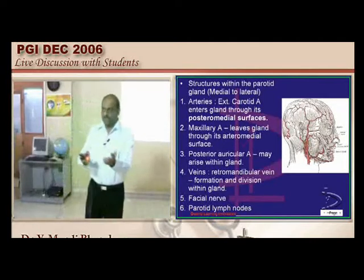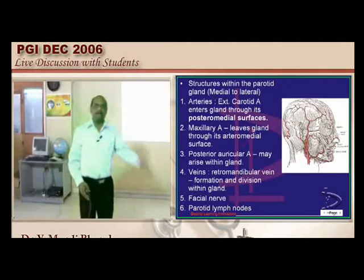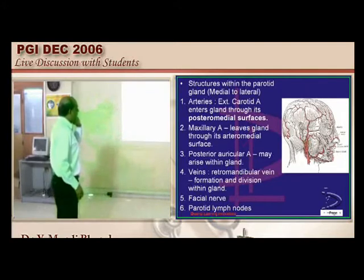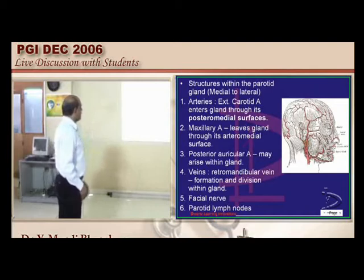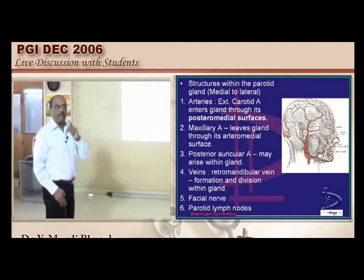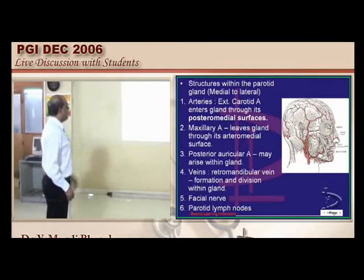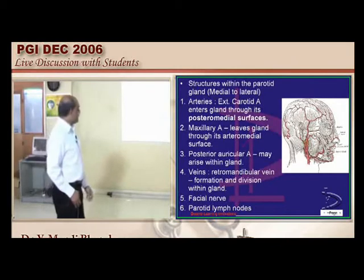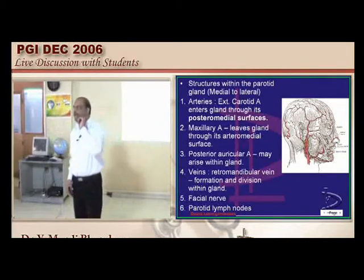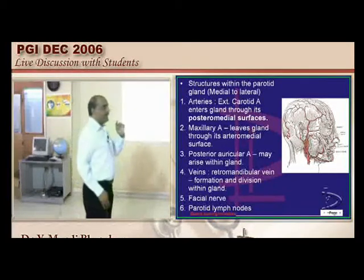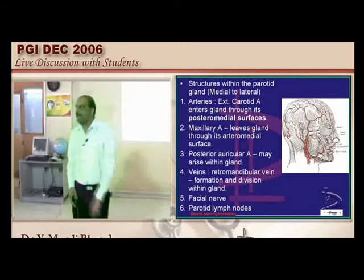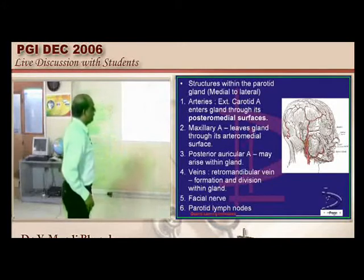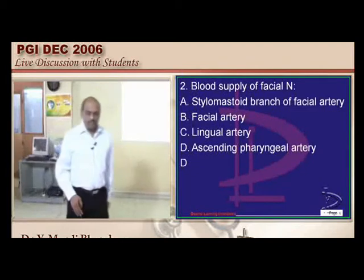Now what are the structures which have a very close relationship with the parotid gland? We have the external carotid artery passing to the posteromedial surface, the maxillary artery along the anteromedial surface, the posterior auricular nerve which arises within the gland, the retromandibular vein, facial nerve, and parotid lymph nodes — they are all in close relationships. There is a reason parotid lymph nodes are not located typically behind the gland; rather they are in very close relationship within the gland.